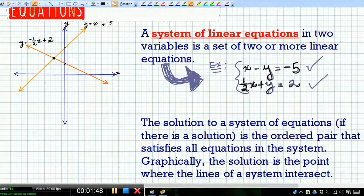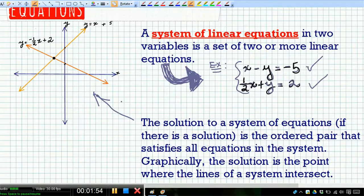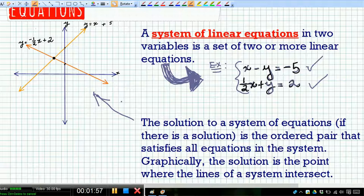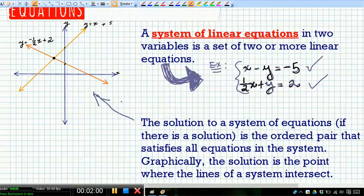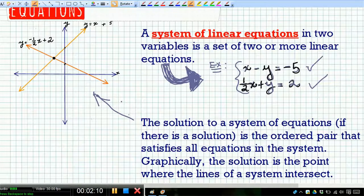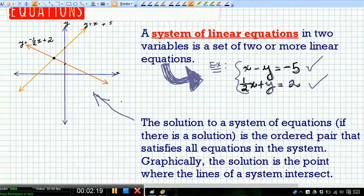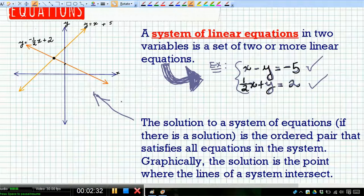Now if you look over to the left, there's a graph I did just before I began. The solution is a set of coordinates, XY coordinates, ordered pair, that would satisfy all the equations. Graphically though, what we're going to do is learn to solve these by graphing first. Graphically, it would be the point of intersection. So graphically, the solution is the point where the lines of a system intersect. There are two values you're looking for in solving your systems.